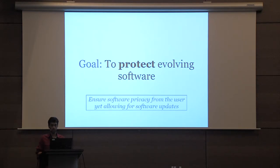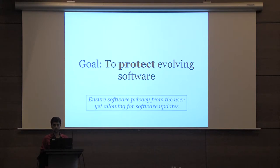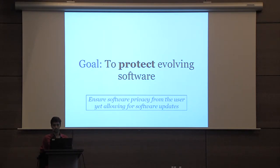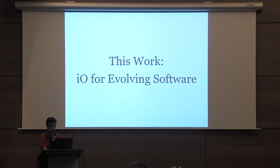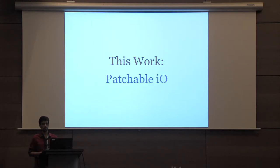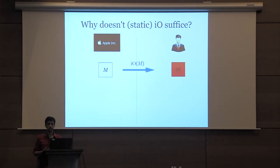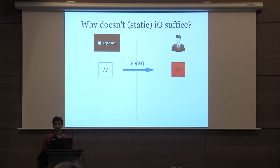The goal of this work is to protect evolving software. There are two main subgoals: one is to achieve privacy of the software, and another is a functionality requirement where we want to ensure that the software can be updated over a period of time while ensuring privacy. We define the notion of IO for evolving software, which we call patchable IO. Before defining it, let's see why standard IO for Turing machines doesn't itself suffice to get IO for evolving software.